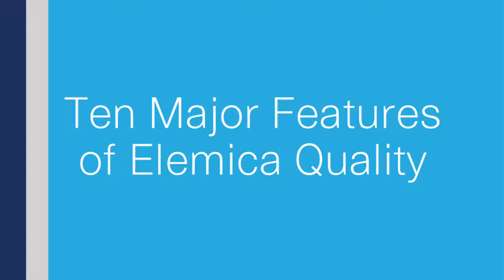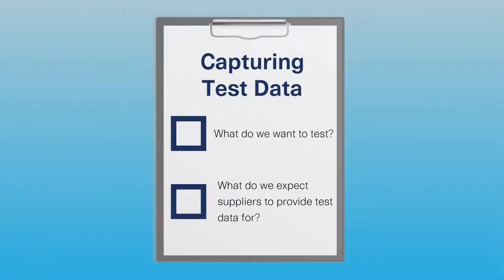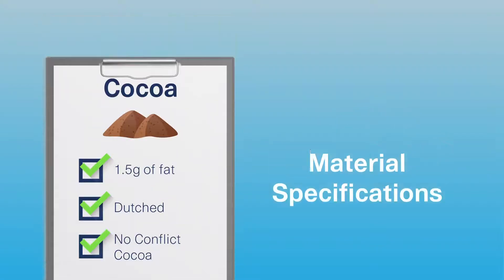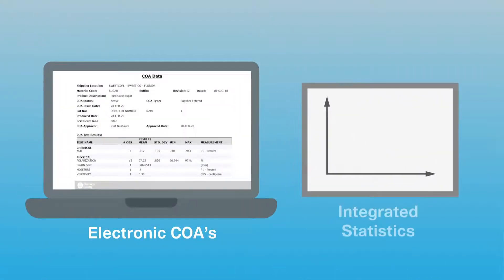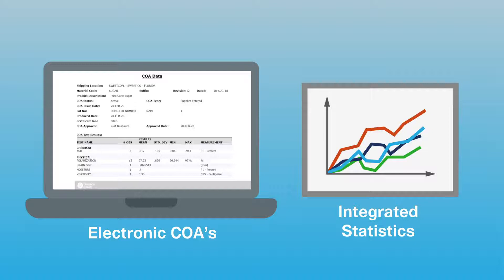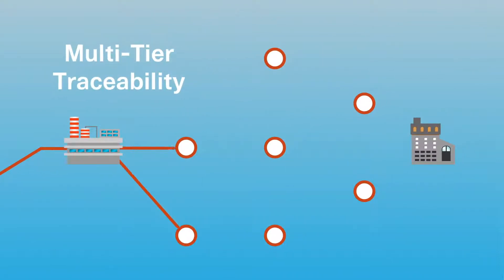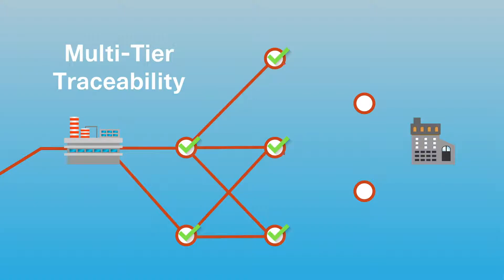There are 10 major features within the system. In order to capture test data, we need to know what we want to test and what suppliers should provide data for. We have material specifications captured either manually or electronically from our clients. When we get those electronic COAs, the integrated statistics built into the system make it very easy even for people who are not statistically inclined. We can do multi-tier traceability where we can track quality across multiple steps — multiple suppliers, the flow of material, and the ingredients that go into finished products.